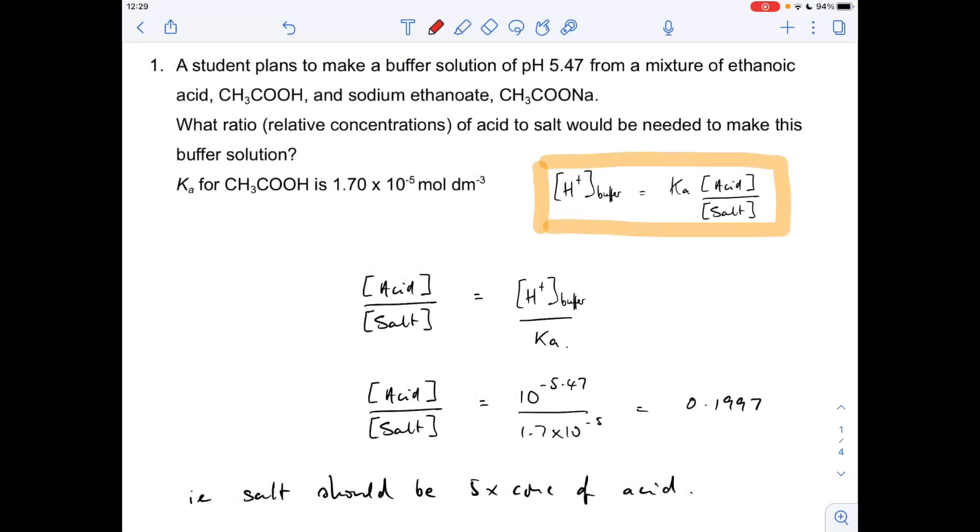Okay, so first question. A student's got to make a buffer with a pH of 5.47 from a mixture of ethanoic acid and sodium ethanoate. We've got to calculate the ratio or the relative concentrations of acid to salt that would be needed to make the buffer, and we've got the Ka for the weak acid.